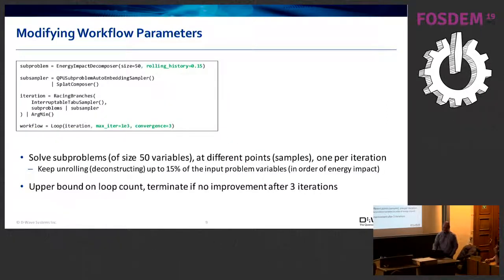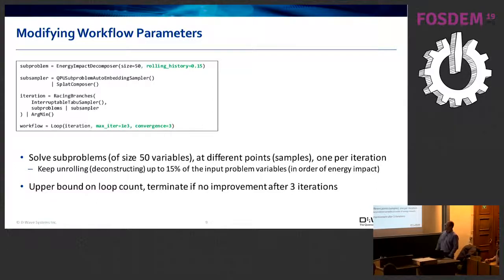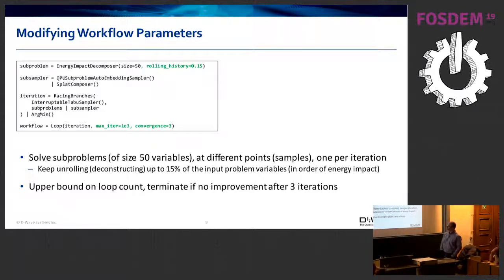Let me walk you through a small buildup of that simple example we just saw. One way to modify the workflow is by tweaking parameters — for example, in the first example we took only the first sub-problem on each iteration. Here we say let's do rolling decomposition of 15% of the problem. On each run, take some other sub-problem until you reach 15% of the global problem. You can also control convergence criteria for your looping.